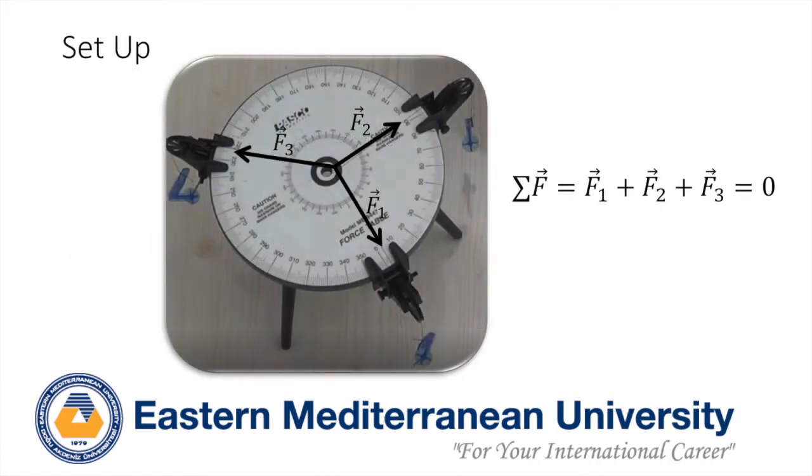As you can see from the setup, you will be considering three forces acting on the knot which connects three strings together. These forces are named as F1, F2, and F3.